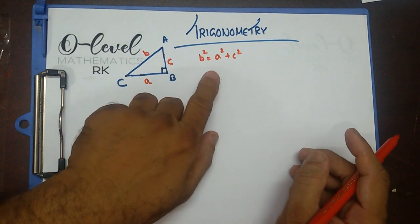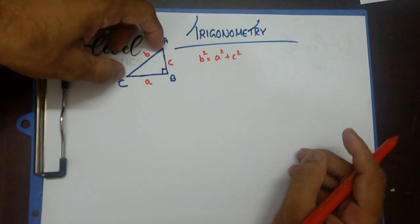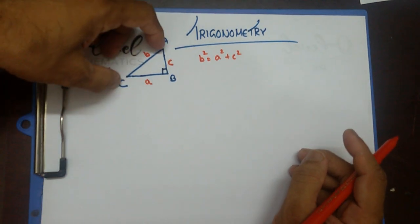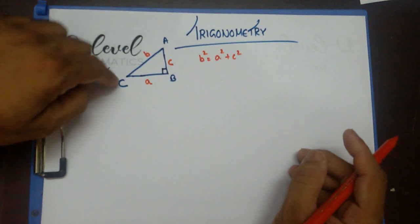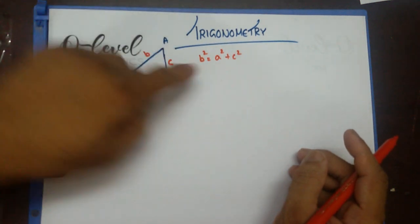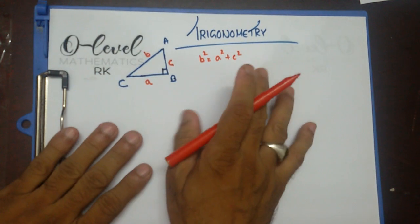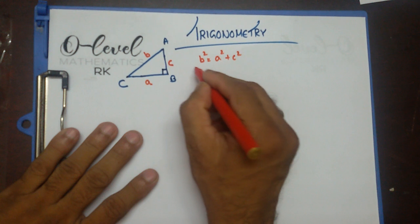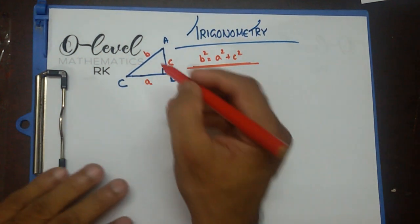What is this actually telling me? The hypotenuse squared of a right angle triangle equals the sum of the squares of the other two sides. That's by the Pythagorean theorem — you already know this. We're going to use that in a second.